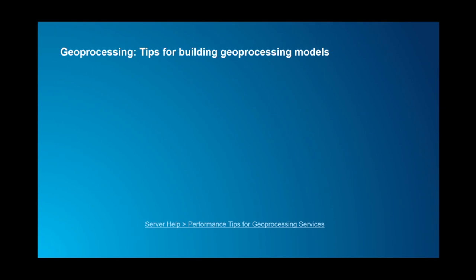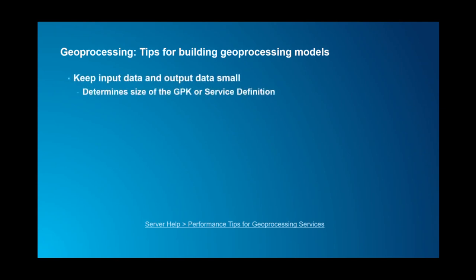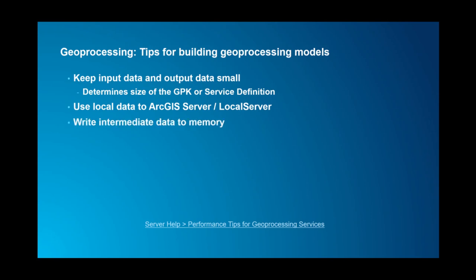There are some considerations for building these geoprocessing tools that are going to run as a service. Keep input and output data small — otherwise it unnecessarily bloats the size of the service definition or GPK artifact. Make sure you use data local to the ArcGIS Server or local server instance to avoid network traffic overhead. There's also an in-memory workspace you can write to, to avoid unnecessary overhead of writing to disk. Add attribute and spatial indexes — spatial analysis involving clip, extract, or intersect will benefit from spatial indexes of the right size.